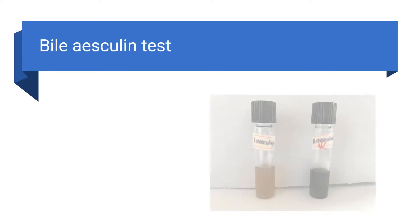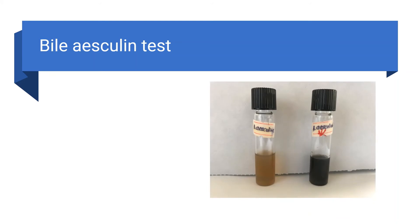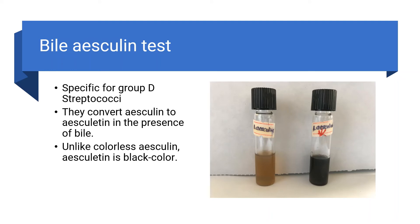This is the bile esculin test. On the left side you can see the normal colour of the bile esculin medium. On the right side you can see the inoculated medium, where we have inoculated group D streptococci. Group D streptococci hydrolyze esculin to esculitein, which produces a black colour. So that is a very important test to identify group D streptococci.